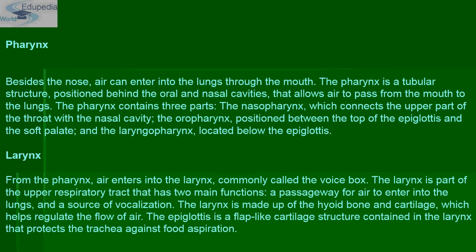After the nose comes the pharynx and larynx. Besides the nose, air can enter the lungs through the mouth. The pharynx is a tubular structure positioned behind the oral and nasal cavities that allows air to pass from the mouth to the lungs. The pharynx contains three parts: the nasopharynx, which connects the upper part of the throat with the nasal cavity; the oropharynx, positioned between the top of the epiglottis and the soft palate; and the laryngopharynx, located just below the epiglottis.